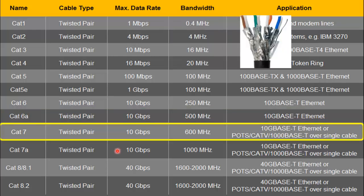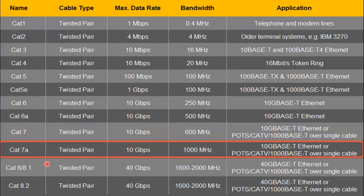Then comes category 7, which supports 10 gigabits per second at a maximum bandwidth of 600 megahertz. This is due to the insulation of aluminum foil and a shielded braid on all the twisted pairs separately. Then comes category 7A, which supports 1000 megahertz bandwidth.